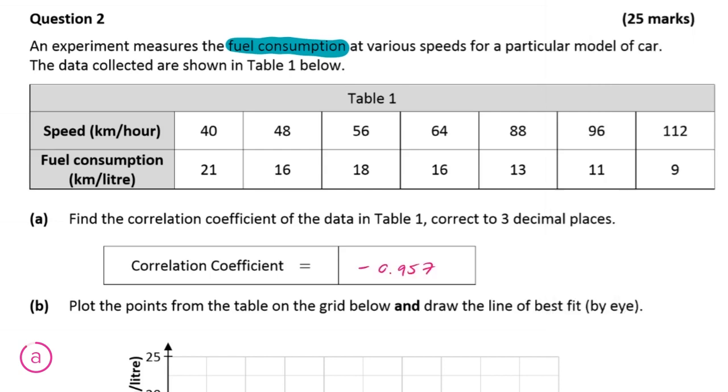So this correlation coefficient basically describes the relationship between the speed and the fuel consumption. And as we can see, it's a very inversely proportional relationship, whereby when the speed increases, the fuel consumption decreases pretty much linearly. And a perfect inverse correlation would be minus 1, so we're very close to that.